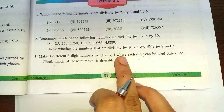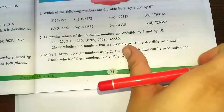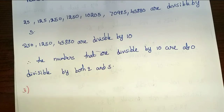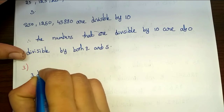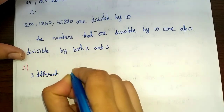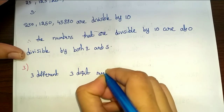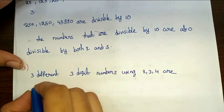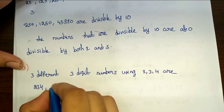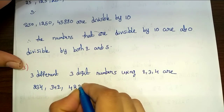Divisibility rule by 9: sum the digits of the total number and divide by 9. The same rule applies for 3 as well — sum the digits and check. So the three different 3-digit numbers using 2, 3, 4 are: 234, 342, and 423.